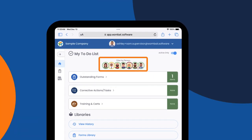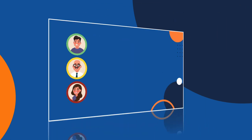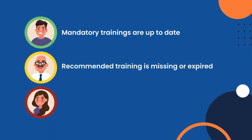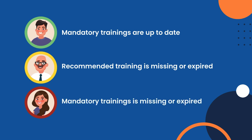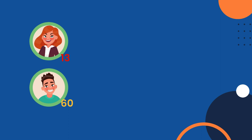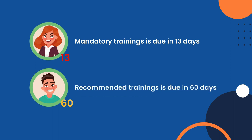The colored circles around the avatars provide a quick status update into each person's training and certifications. Green indicates all of their mandatory trainings are up to date. Yellow indicates a recommended training is missing or expired. Red indicates a mandatory training is missing or expired. You'll also see some avatars have numbers in the corner, showing how many days the worker has left until something is coming due. A red number indicates days until a mandatory training is coming due; a yellow number indicates days until a recommended training is coming due.